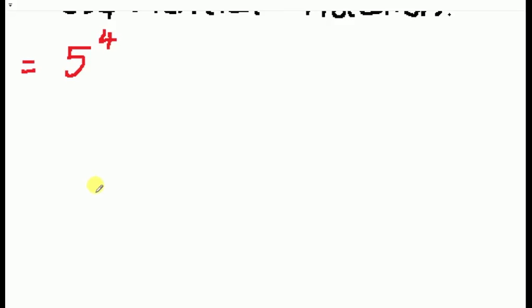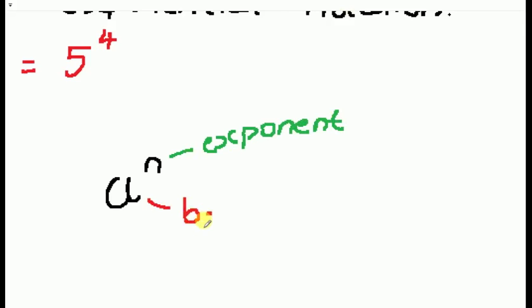In exponential notation, we write a number in the form of a to the power of n, where n is your exponent, a is your base, and everything else is called the power.